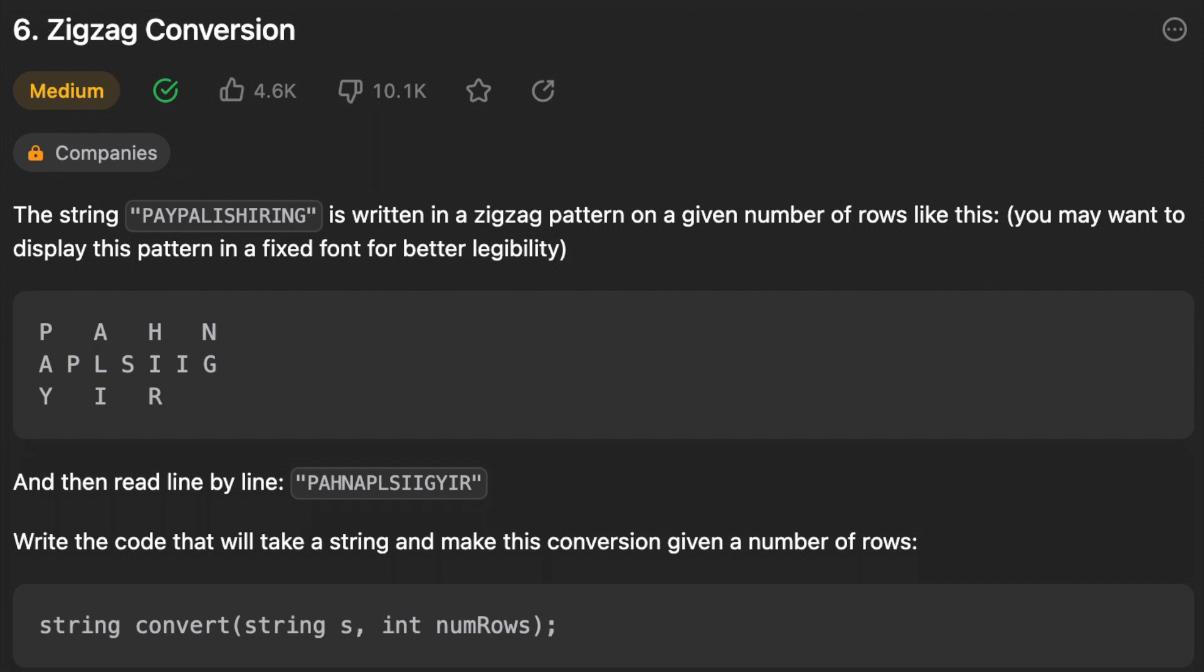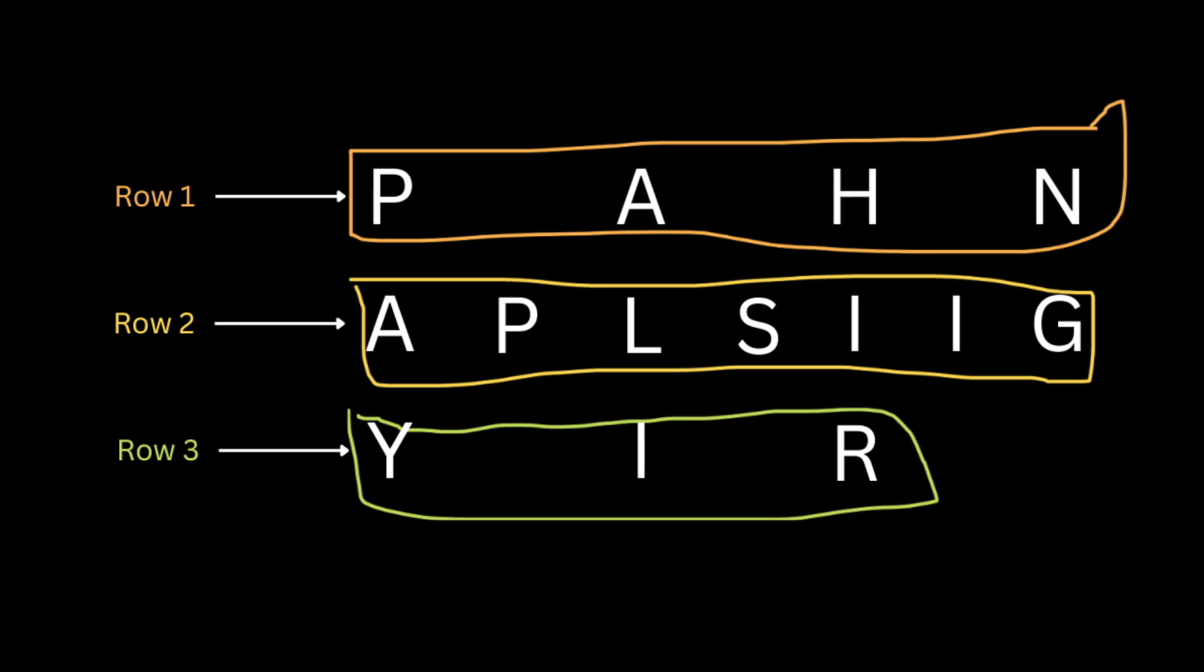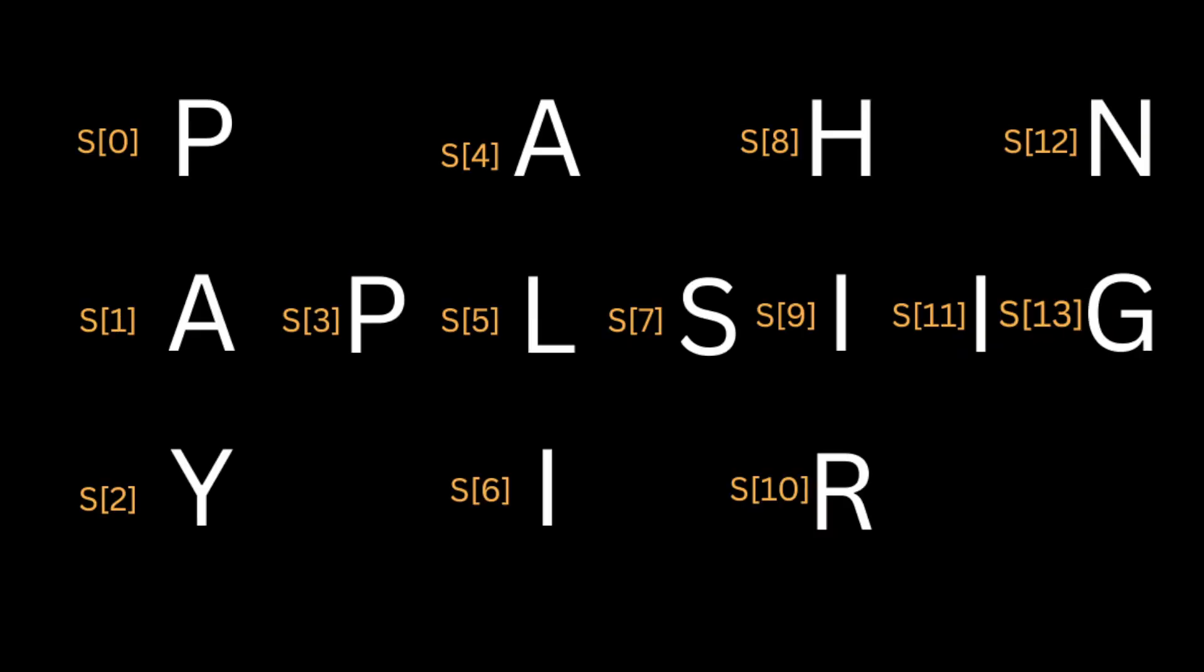The string 'PAYPALISHIRING' is written in a zigzag pattern on a given number of rows like this. So the string 'PAYPALISHIRING' is written in a zigzag, and we have a number of rows, which is three in this first example. The idea here is that the first character is gonna be this, and the second character is gonna be this, and at this last row is gonna be like this.